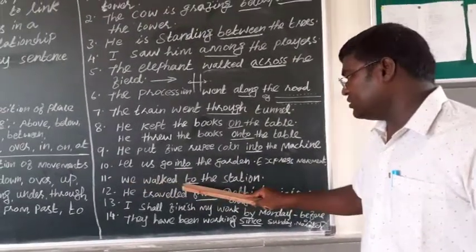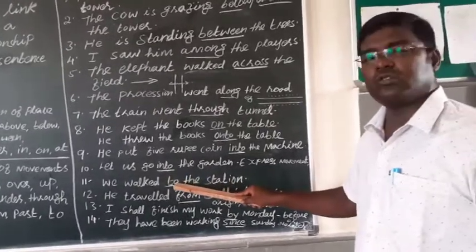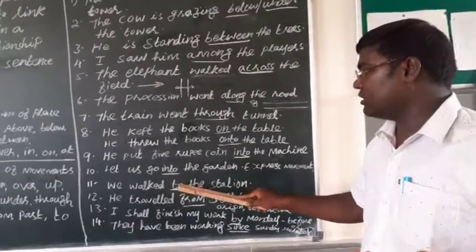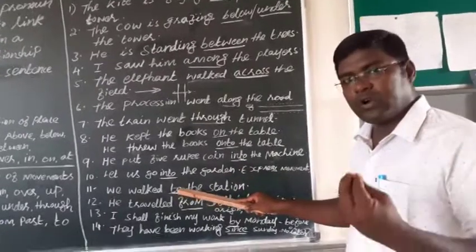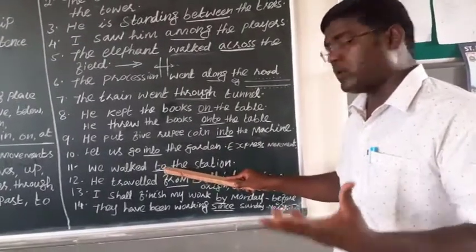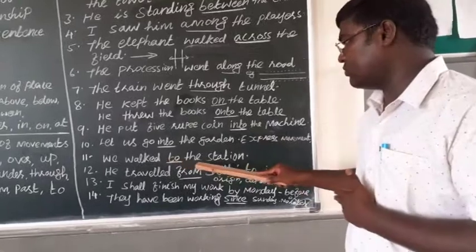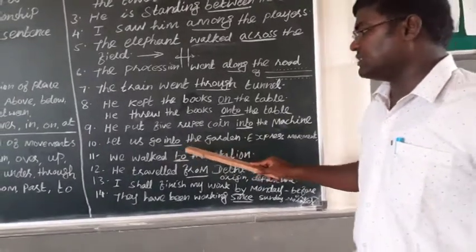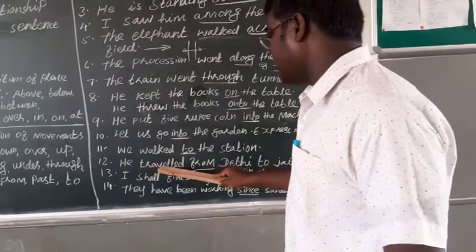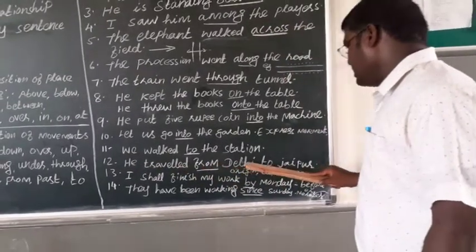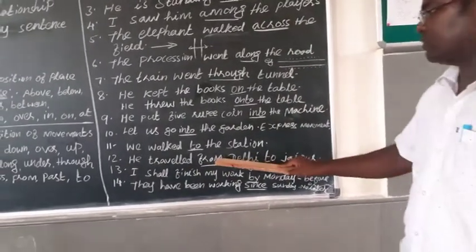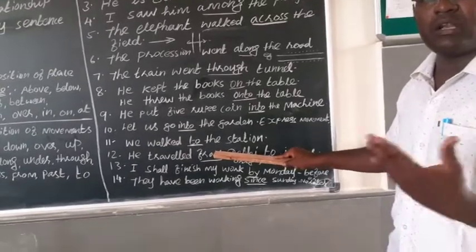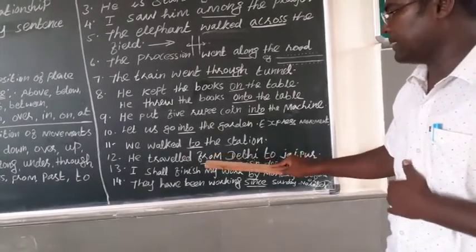We walked to the station. So, to also shows the movement, or it also shows from one place to another. Where you are moved from one place to another. So, it's called movement. Next, we have the sentence. He traveled from Delhi to Jaipur. From showing the movement. From one place to another.